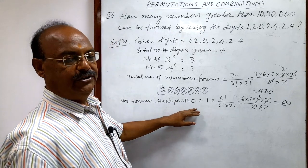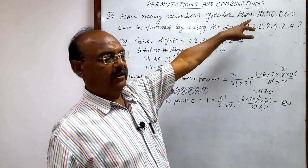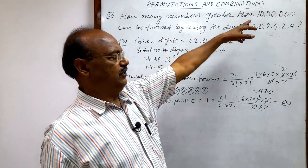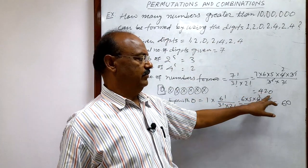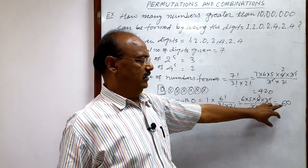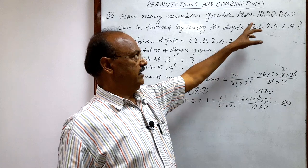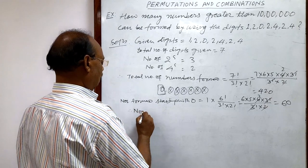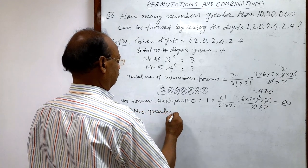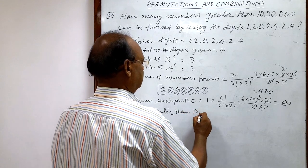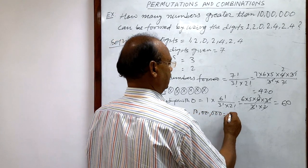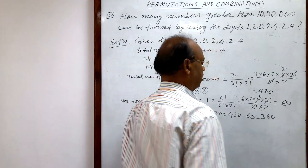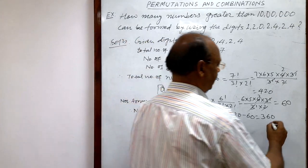These 60 numbers starting with zero are smaller than 10 lakhs. The numbers greater than 10 lakhs will be the difference of the total numbers and the numbers smaller than 10 lakhs. Therefore, numbers greater than 10 lakhs = 420 − 60 = 360. That is the answer.